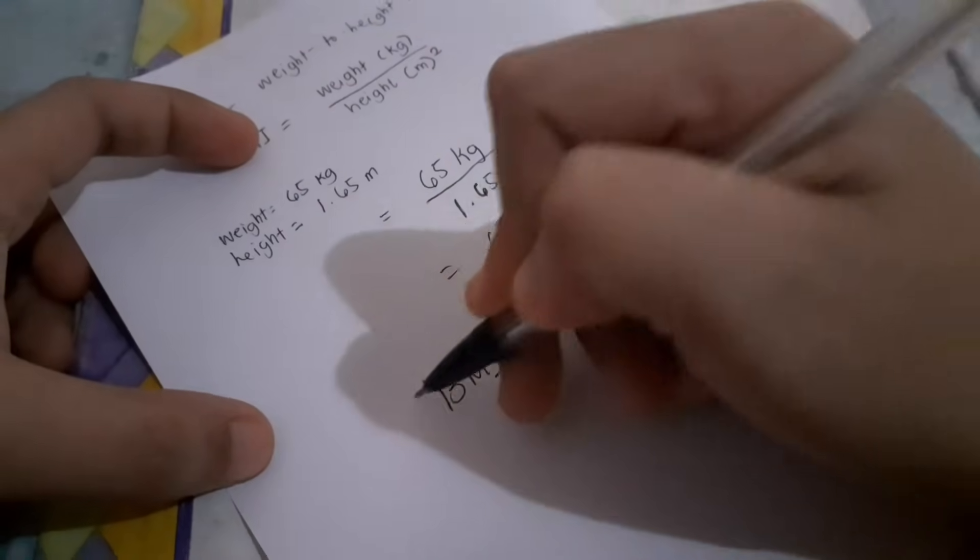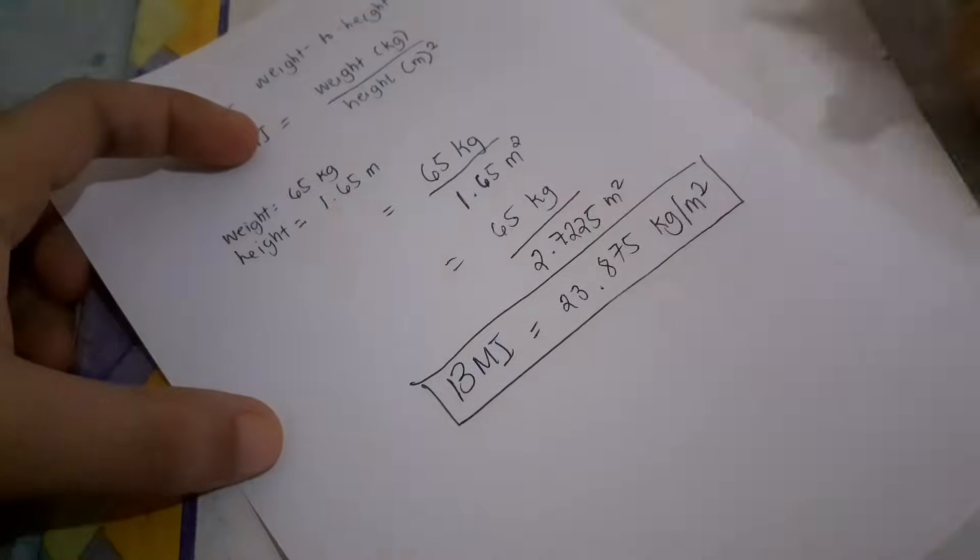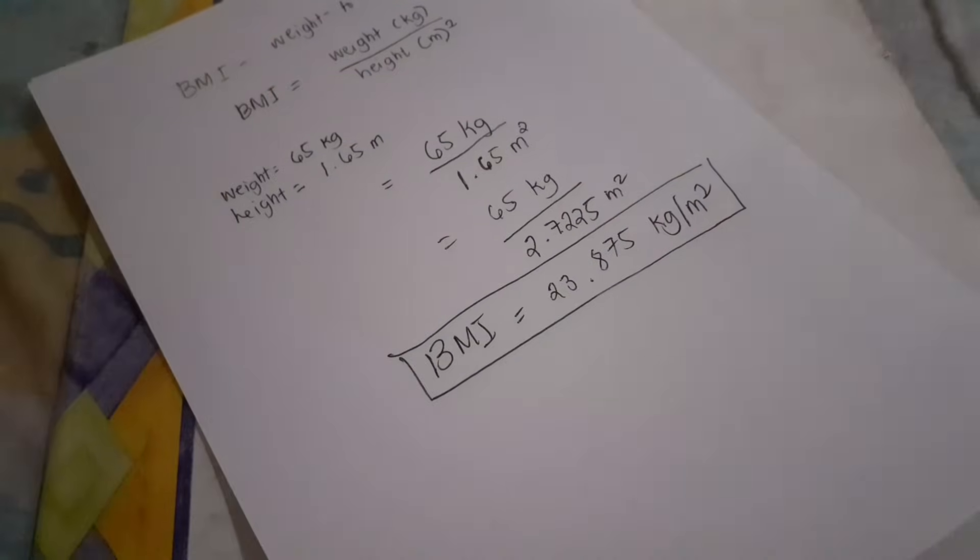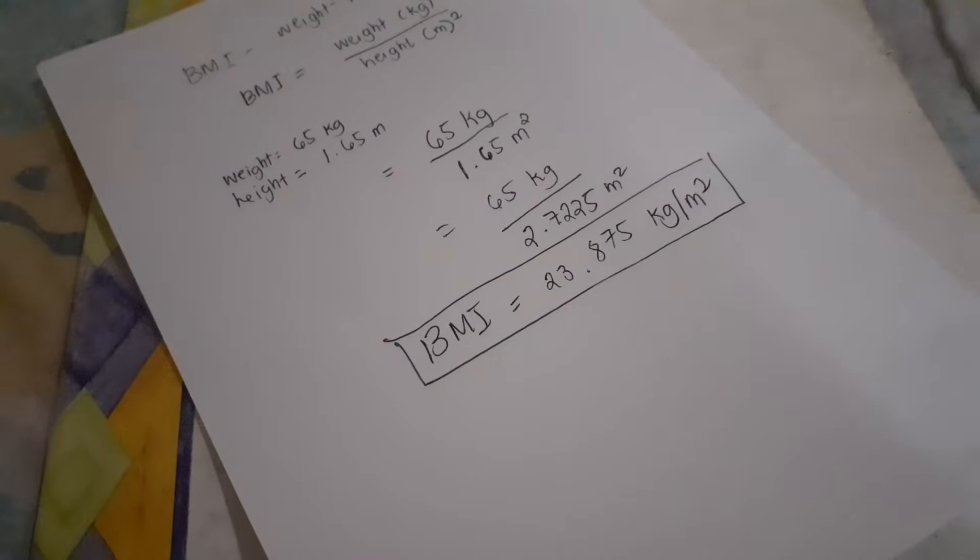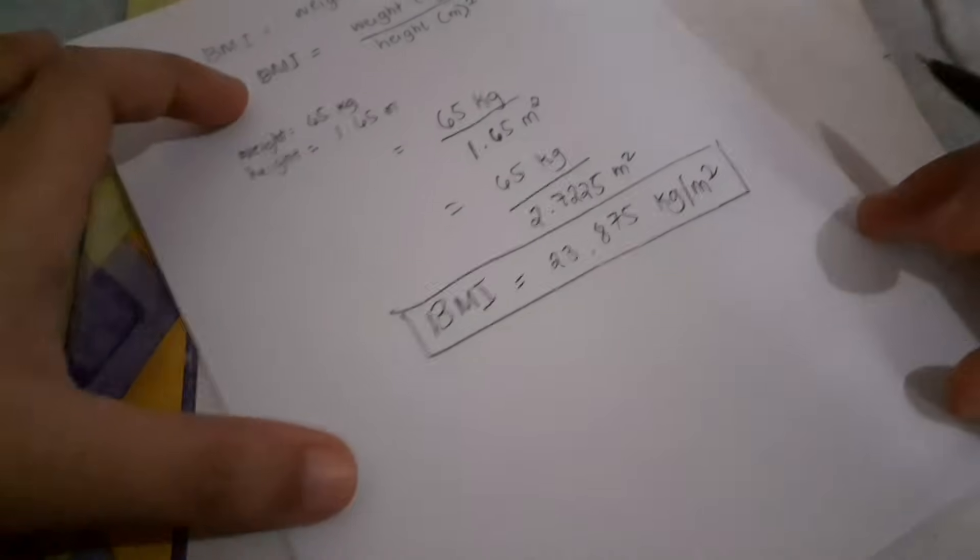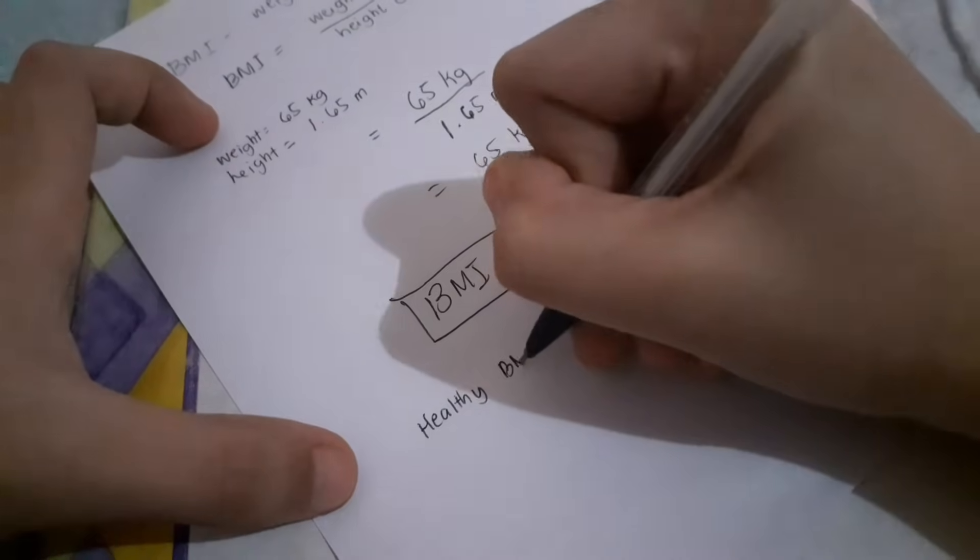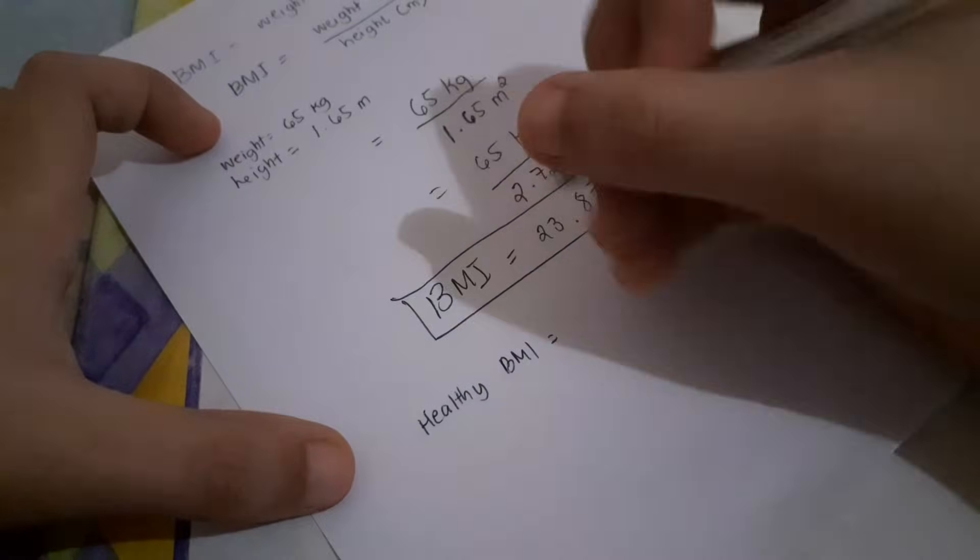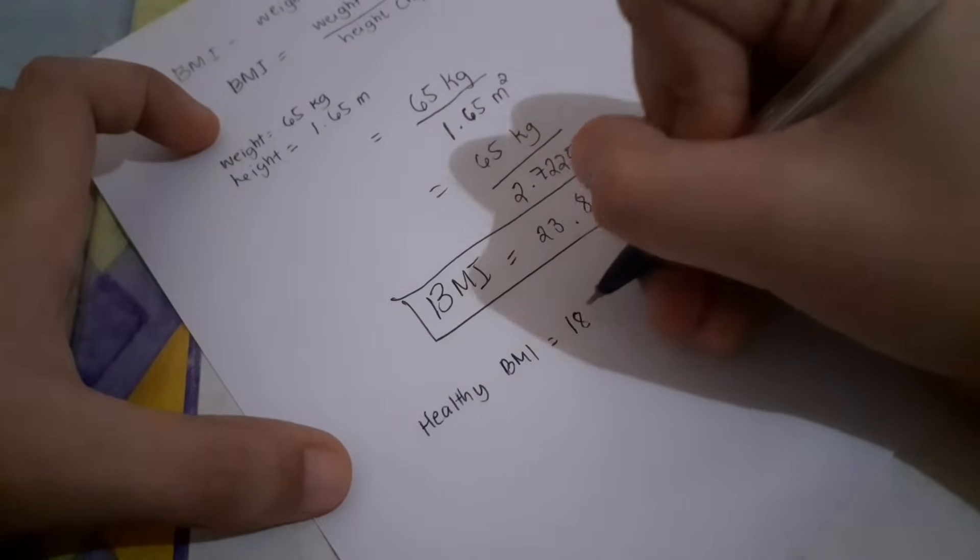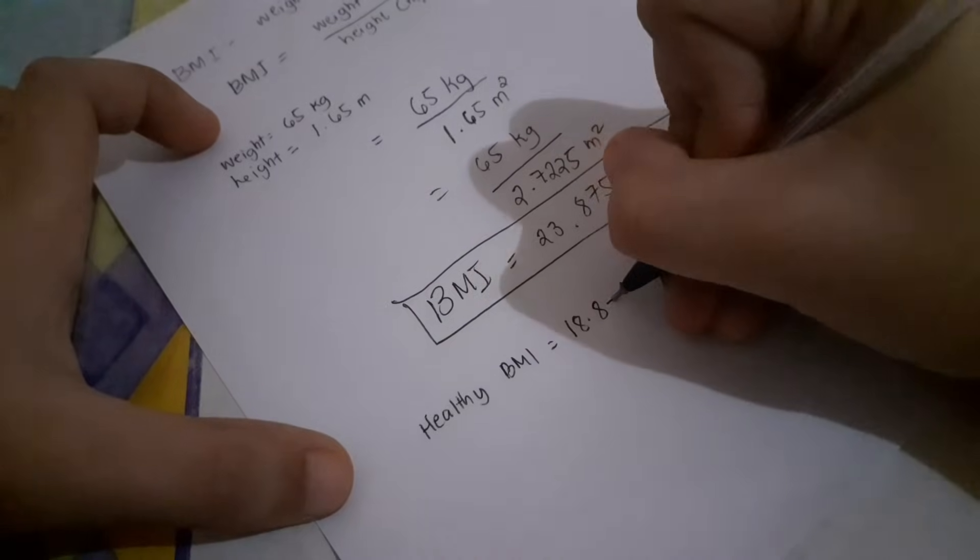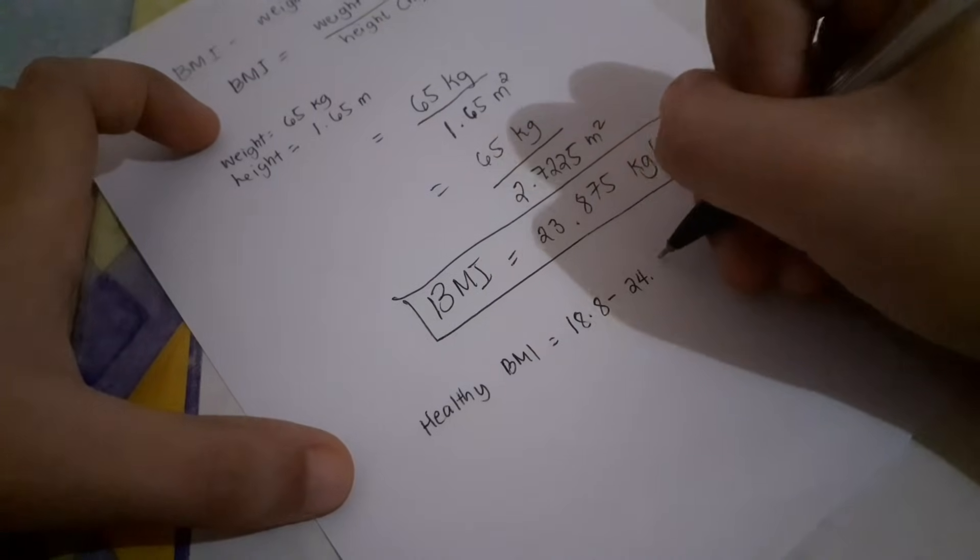So paano ko po malalaman kung ako ay healthy, overweight, or obese? So nandito yung range. So ang healthy BMI po ay nagfa-fall lang sa 18.8 to 24.9.